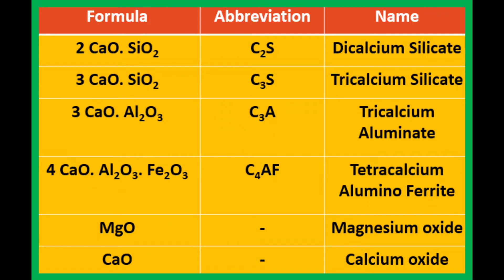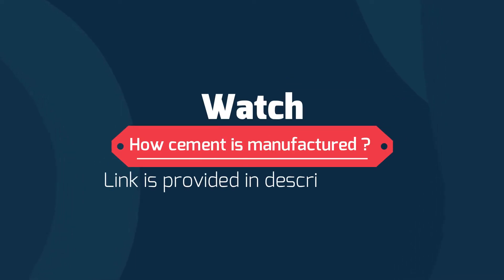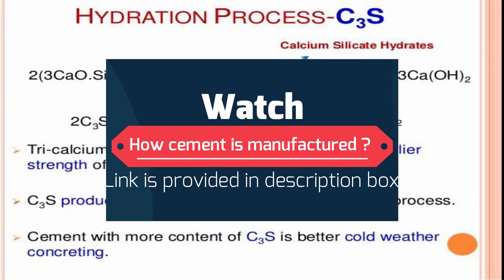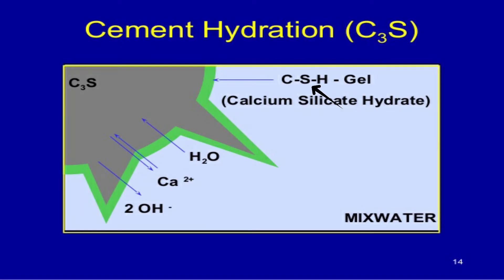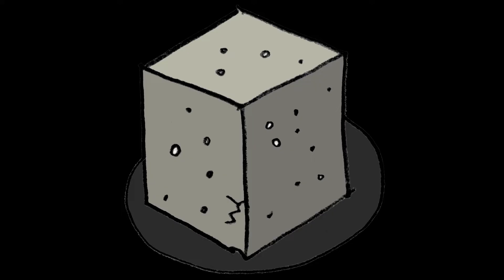Let us understand the hydration of cement first. Now, as we know, cement is composed of argillaceous and calcareous mixture — that is, it is made up of silica and calcium components. The link for a detailed video regarding manufacturing of cement can be found in the description. These tricalcium silicate or dicalcium silicate compounds present in the cement, when they come in contact with water, form a gelatinous substance represented by the formula as shown on screen. This formation, also known as calcium silicate gel, binds with the aggregate leading to a rock solid mass, making the concrete denser, less porous, and enhancing its physical and mechanical properties.